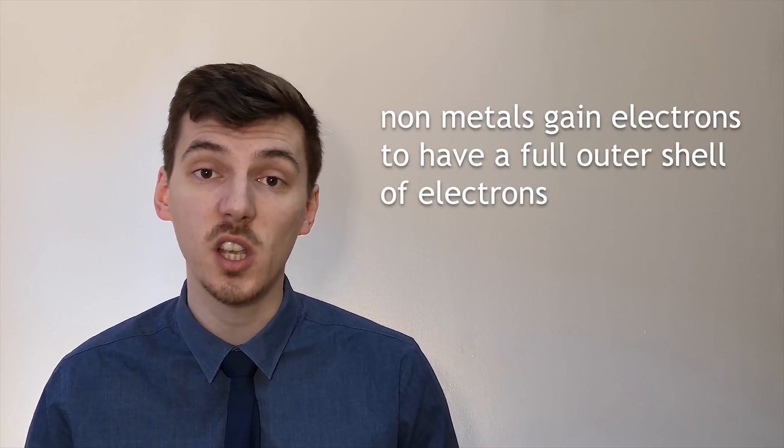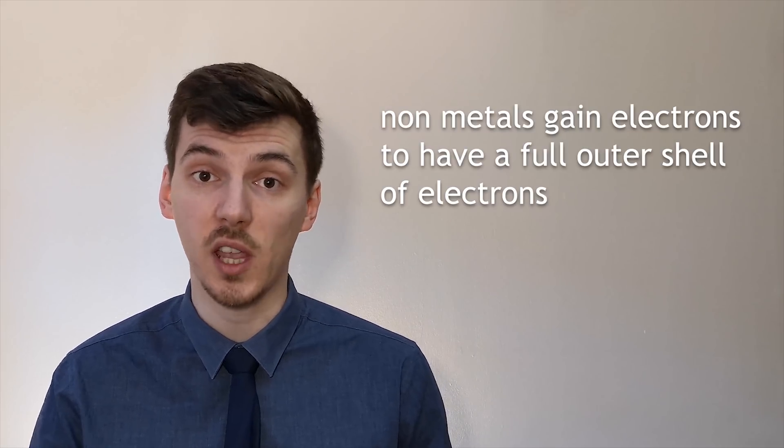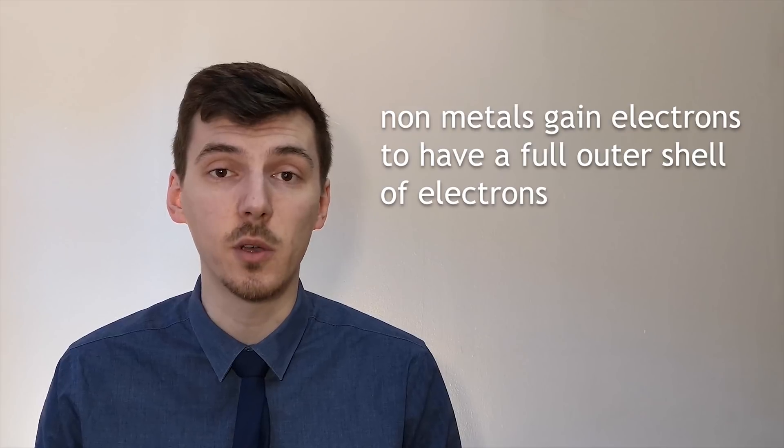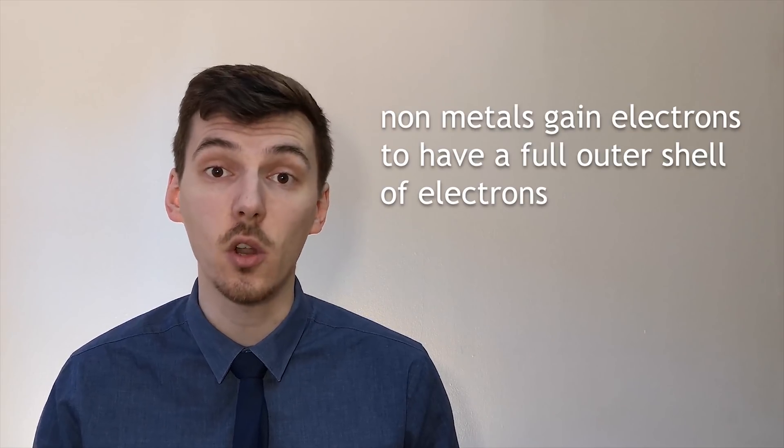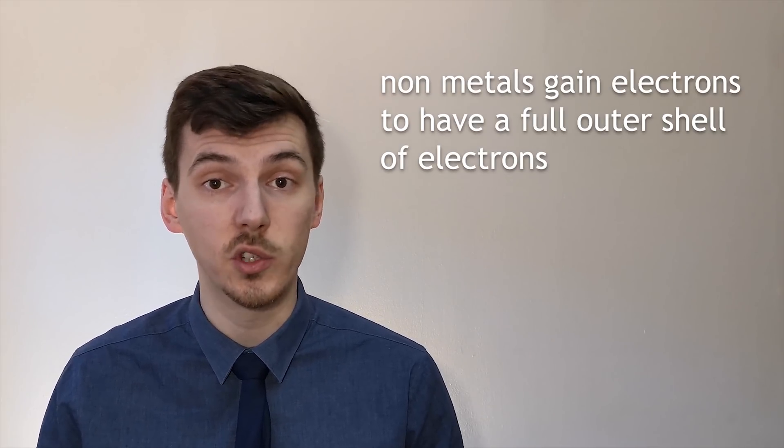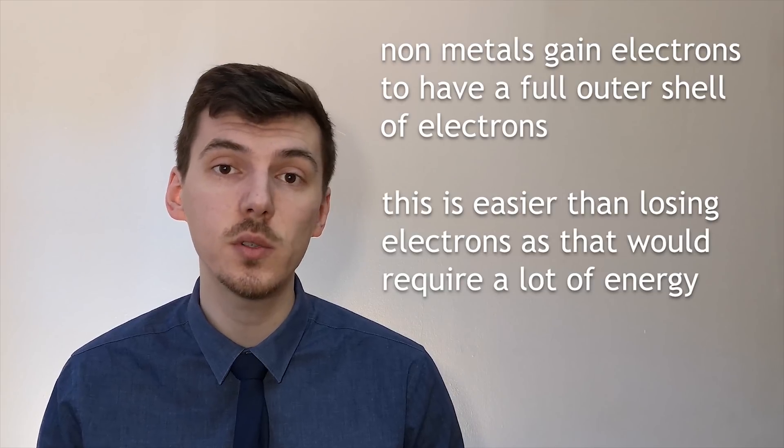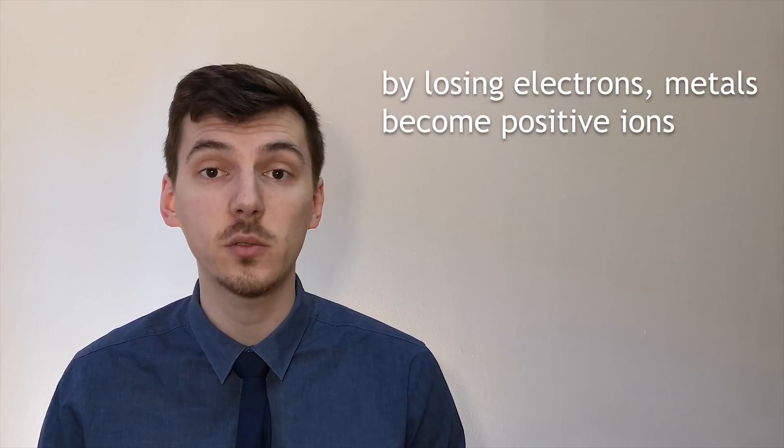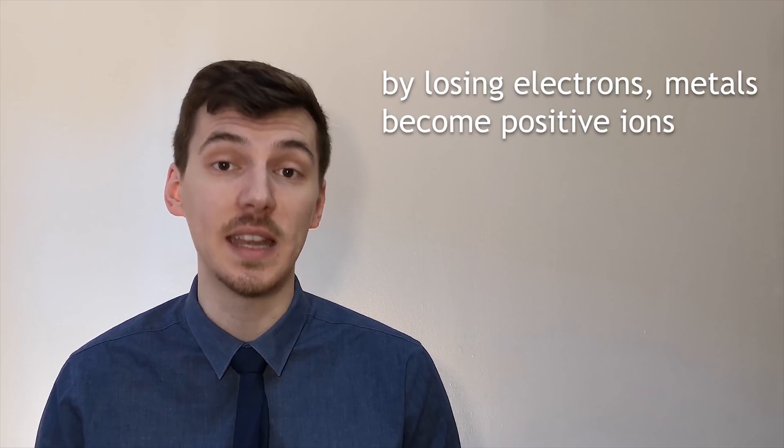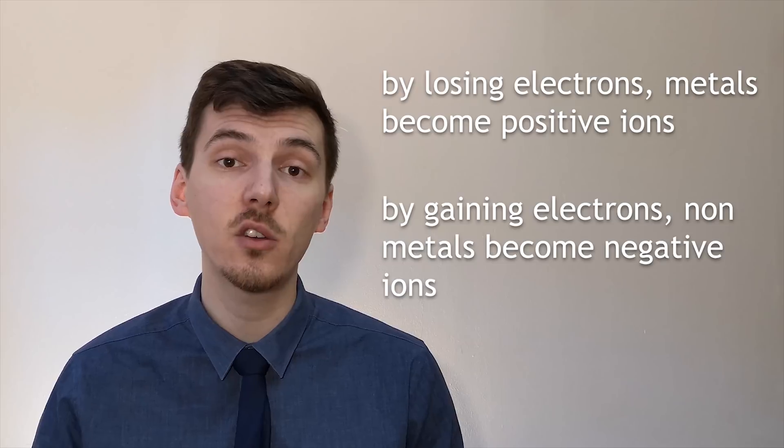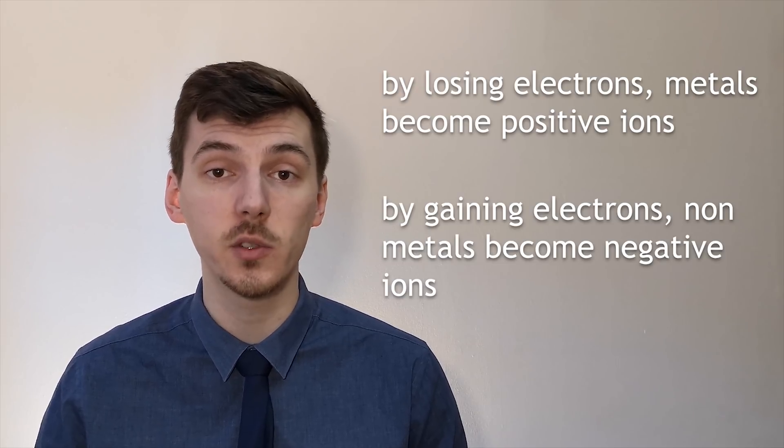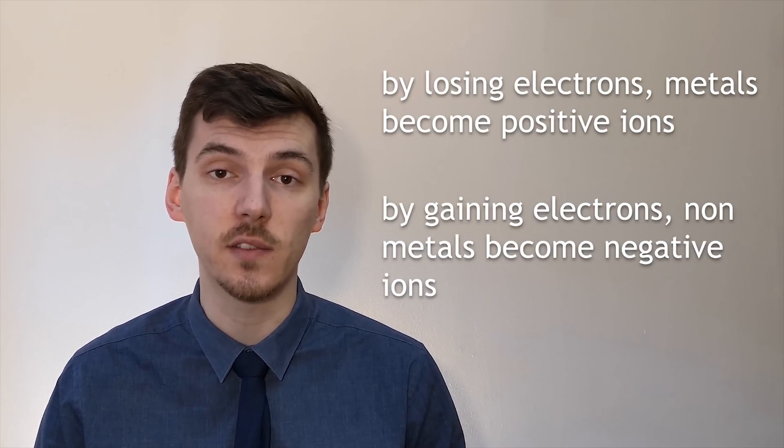Non-metals such as those in group 6 and group 7 have six or seven electrons in their outermost shell respectively. It's a lot easier for these elements to gain one or two electrons than it is to lose six or seven electrons. So we find that metals become positive ions because they're losing negative electrons and non-metals become negative ions because they're gaining these negative electrons.